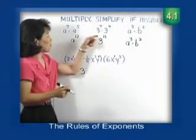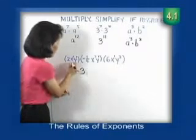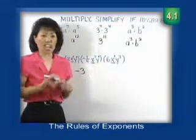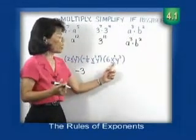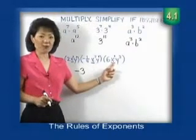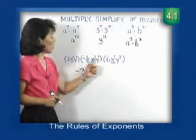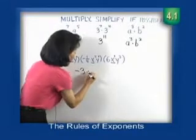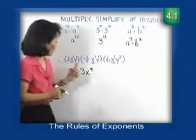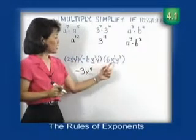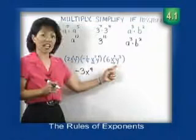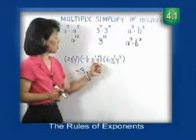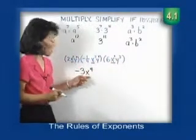Now we're going to use the same rule as before — look at like bases. We have x to the first power, x to the second power, and x to the first power. When we multiply, all we have to do is add the exponents: 1 plus 2 is 3, plus 1 is 4. So we have x to the fourth power.